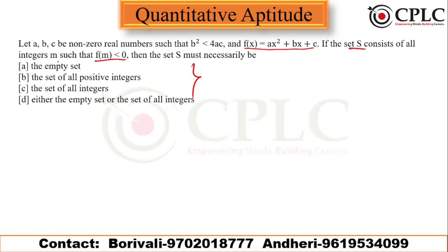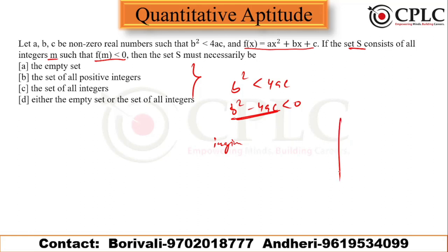Set S contains values where f(m) < 0. Notice that b² < 4ac means the discriminant is less than zero, so the roots of the quadratic are imaginary. If you look at the graph of a quadratic function — it is parabolic. When roots are real and unequal, the graph crosses the x-axis at two points.